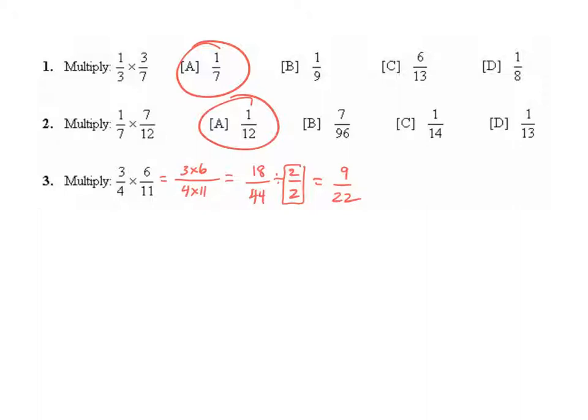Now I want to go back and look at each of these again and show you that we could have actually cross-simplified on all three problems before we began. So in problem number 1, if you cross-simplified, 3/3 equals 1/1. So then when you multiply your numerators and denominators, you get 1/7 right away.